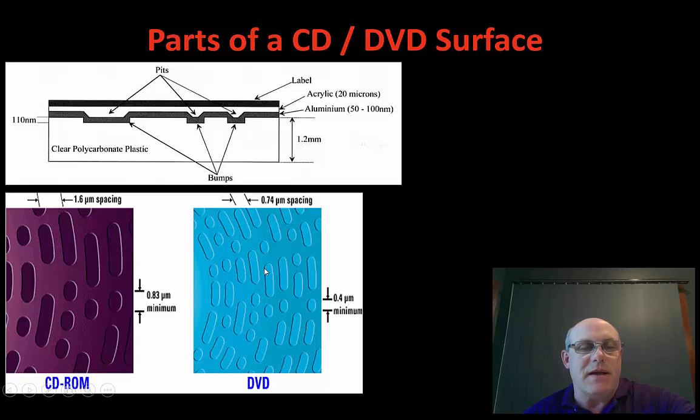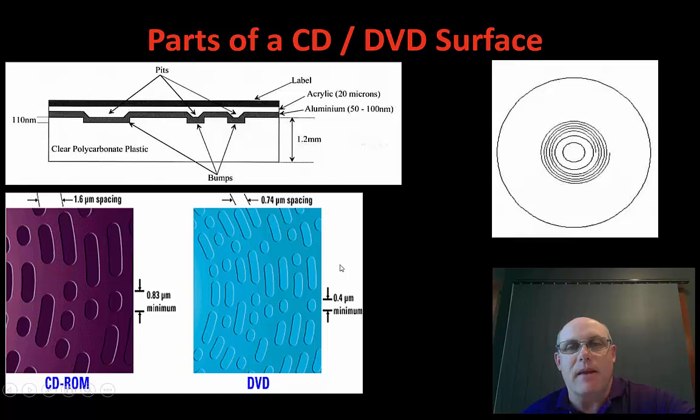On the actual surface there are pits and lands. These are in a spiral. The difference between a CD-ROM and a DVD is that the DVD holds a lot more information because it uses the blue laser instead of a red laser. The actual CD is a spiral from the center outwards, and when it tracks the information, the laser has to actually move to track that information.